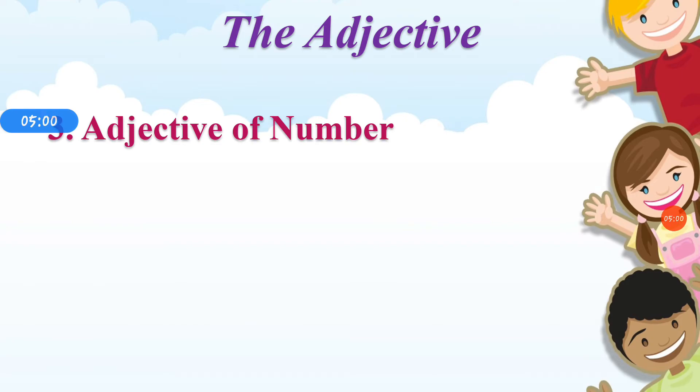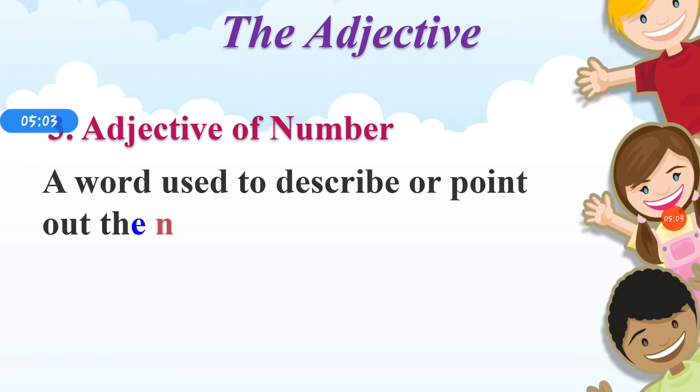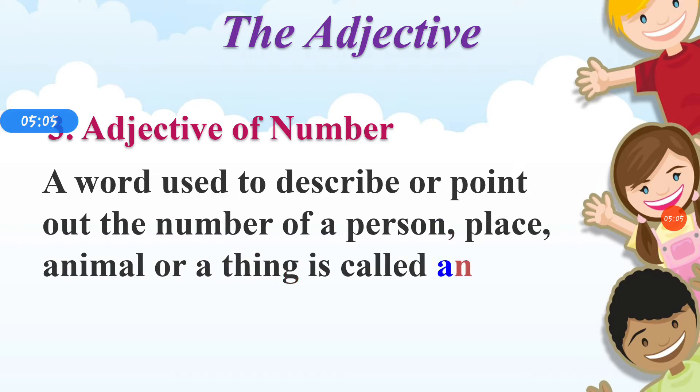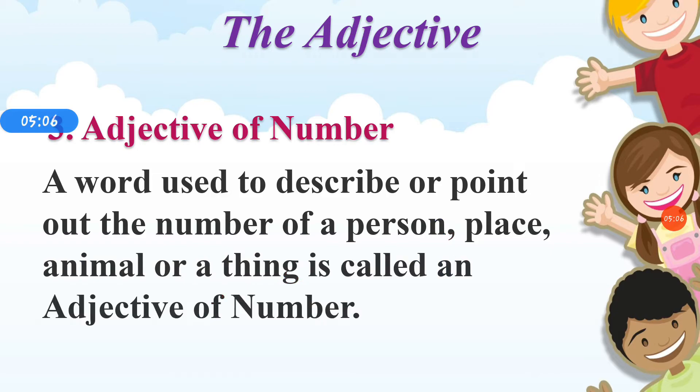Adjective of number. A word used to describe or point out the number of a person, place, animal, or a thing is called an adjective of number.